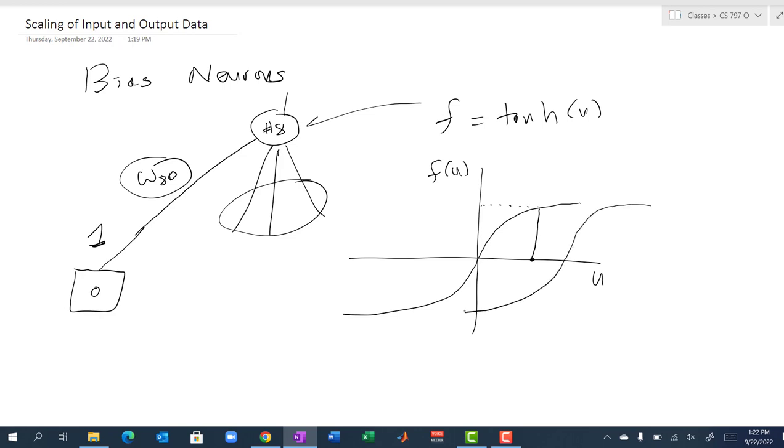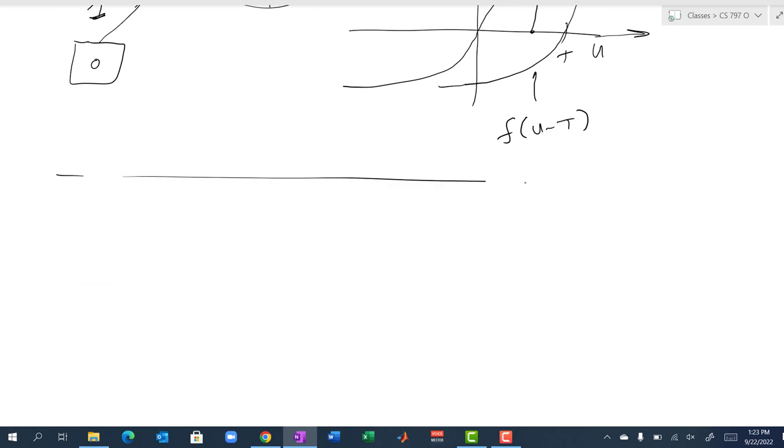What the bias neuron does is it shifts this curve over one way or the other so that we can get a non-zero output for a zero input or a bigger value for a different value of u, because the plot of this is essentially f(u) plus some shift. Bias neurons are really important in allowing neurons to process information and output values over a larger range.